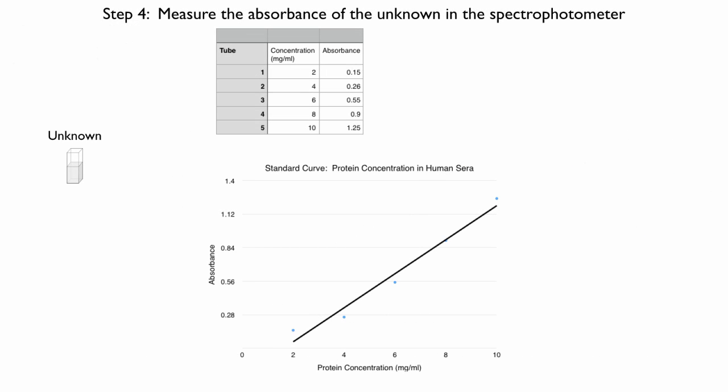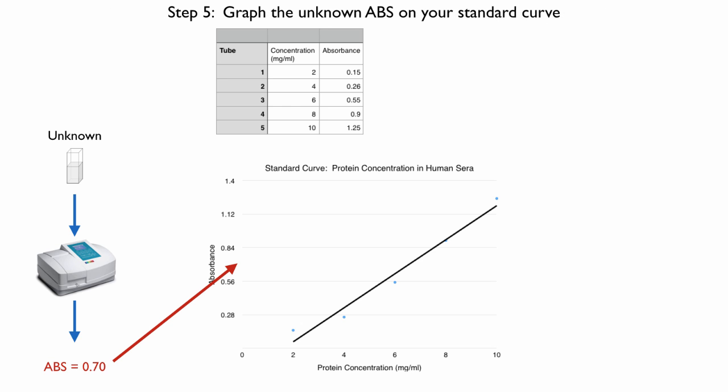Now when you have your unknown, this is step four. You take your unknown, put it in the spectrophotometer, and get the reading. Now you put that reading on the y-axis. Here I just happened to get 0.70. I put that on the y, draw a line straight out until it hits my standard curve, then draw straight down from there until it hits the x-axis. That value on the x is the concentration of my unknown.